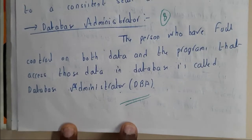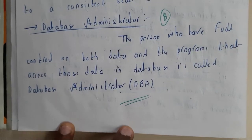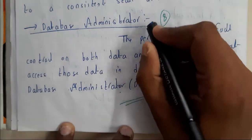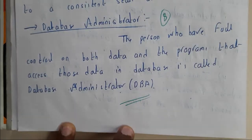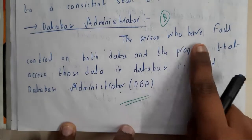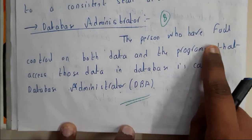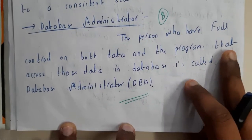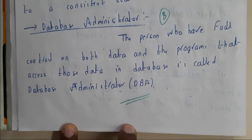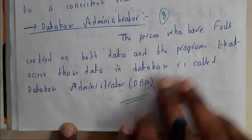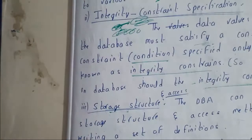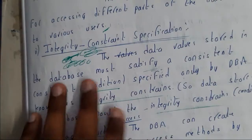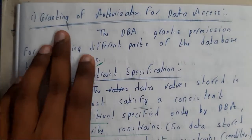Hello guys, we are back with our next tutorial. In this tutorial, let us go through the database administrator. This is also an important question which is repeated in most of the papers. The database administrator is the person who has full control on both data and programs. These are the guys who will be having ultimate rights on the database — they can do anything they want.